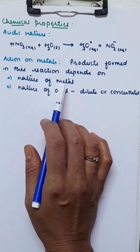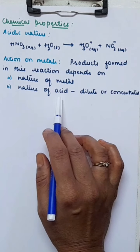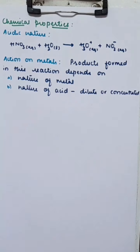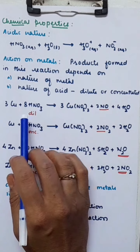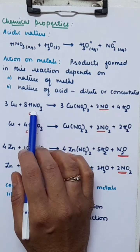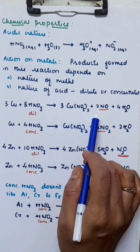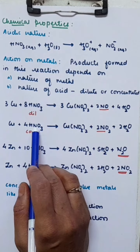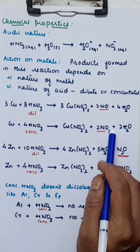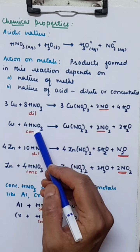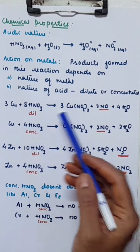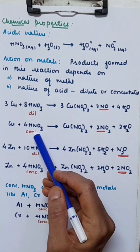Let's take the example of copper. When copper is treated with dilute nitric acid, we get copper nitrate and the gas liberated is nitric oxide. When copper is treated with concentrated HNO3, nitrogen dioxide and water are formed. So with dilute nitric acid, copper gives nitric oxide; with concentrated HNO3, copper gives nitrogen dioxide.